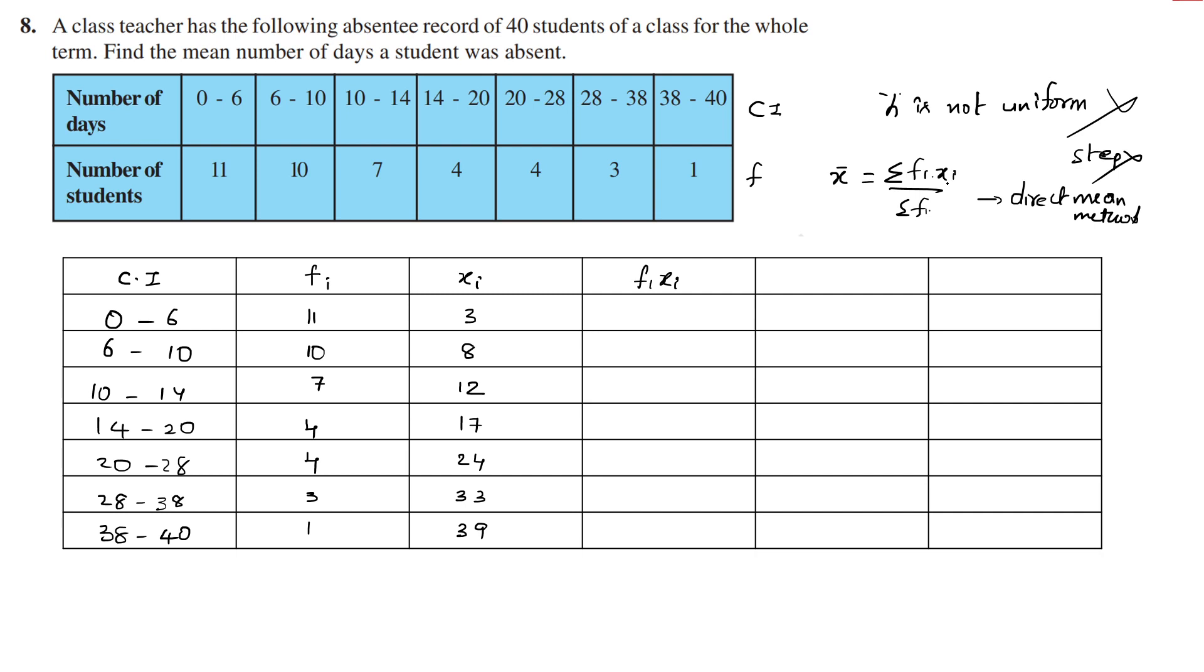Now calculating fi times xi: 11 times 3 is 33, 10 times 8 is 80, 7 times 12 is 84, 4 times 17 is 68, 4 times 24 is 96, 3 times 33 is 99, and 1 times 39 is 39.